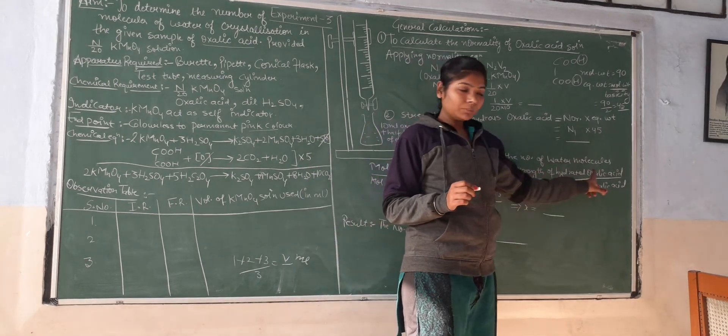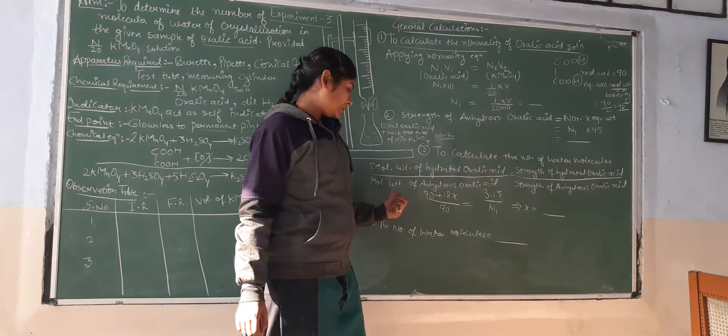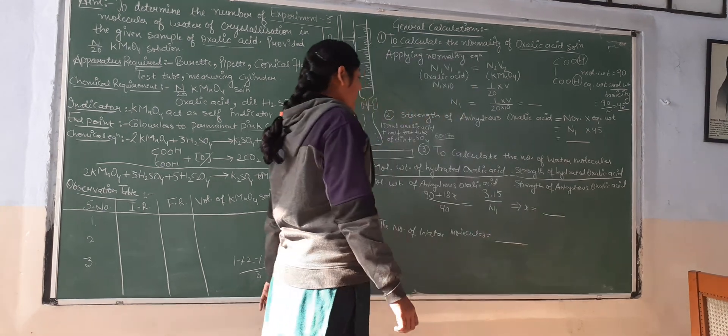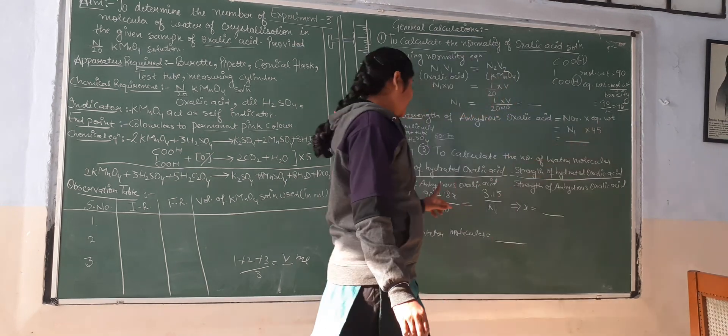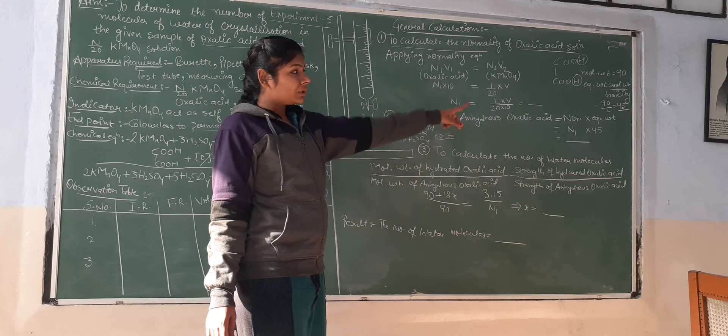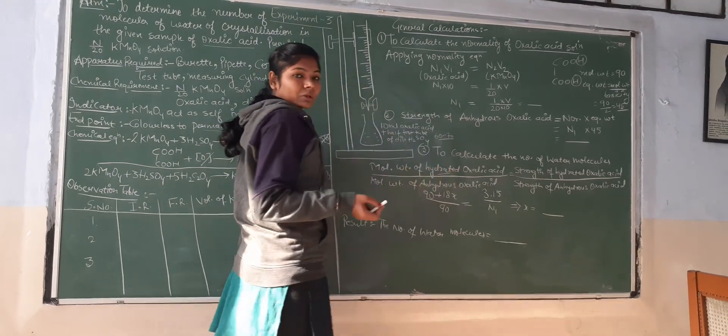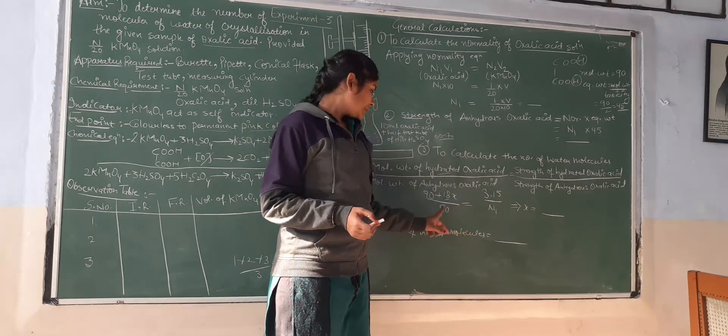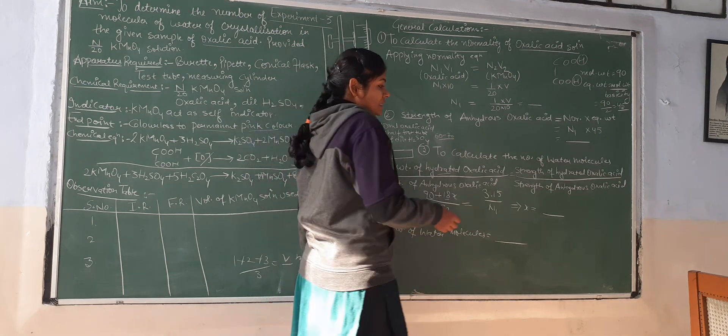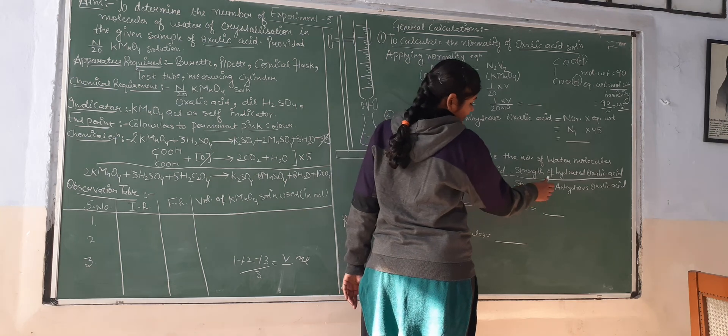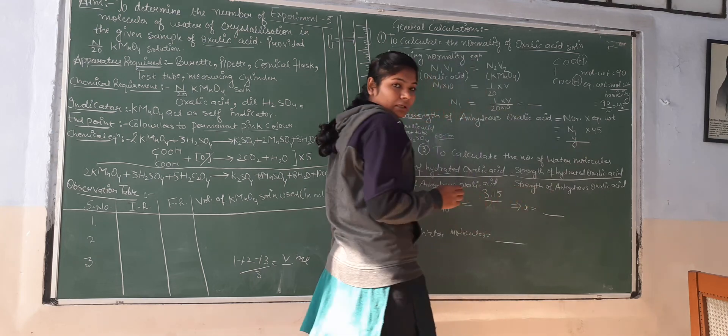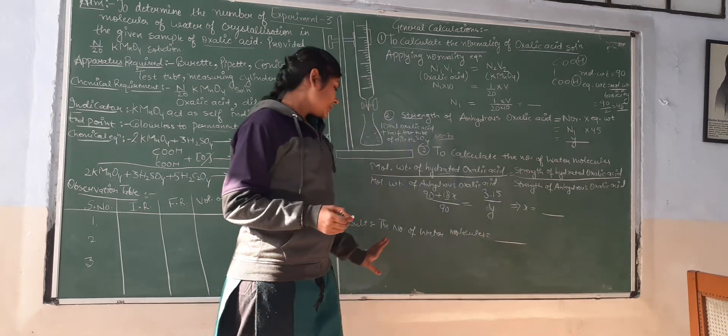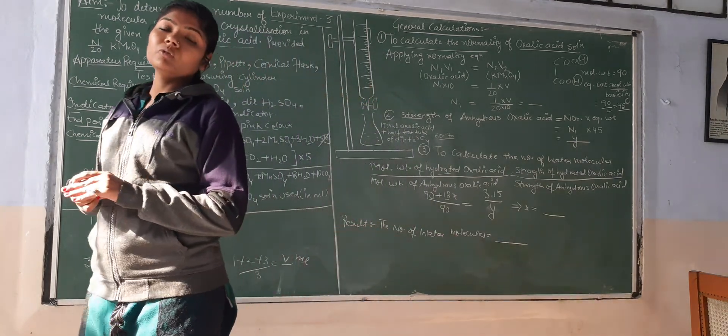To calculate the number of water molecules, use this formula: molecular weight of hydrated oxalic acid divided by molecular weight of anhydrous oxalic acid equals strength of hydrated oxalic acid divided by strength of anhydrous oxalic acid. The molecular weight is 90, so 90 plus 18n, where n is the number of water molecules. Simplify this equation to get the value of n, the number of water molecules in oxalic acid.